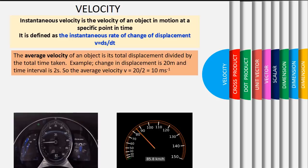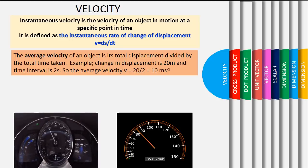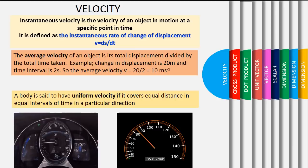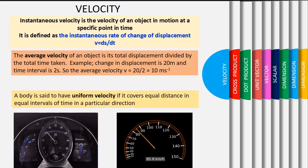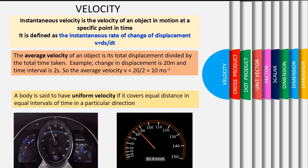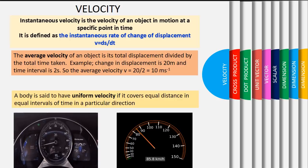The average velocity for the object will be v equivalent to 20 divided by 2, which is equivalent to 10 meters per second. Uniform velocity.